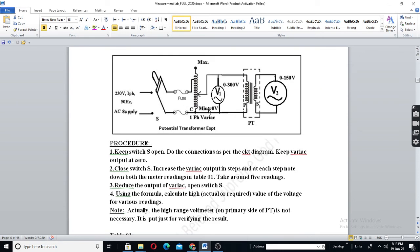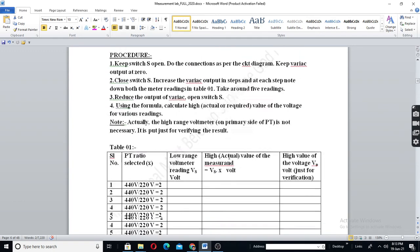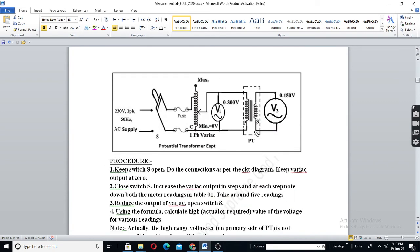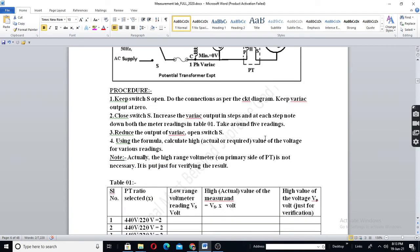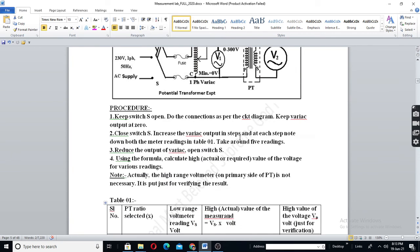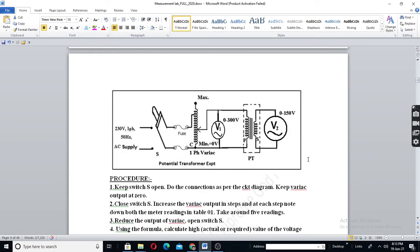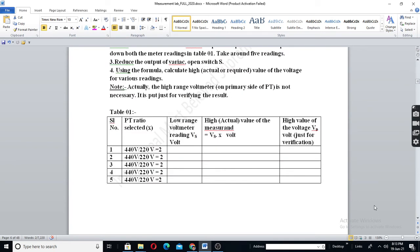So, keep on increasing variac output in steps. Note down both the meters in the table. So, low range voltmeter, you should take this reading. Vs means V2. Vp means V1. There is no need of Vp or V1. We are noting down just for verification.